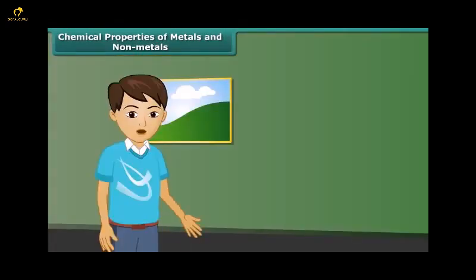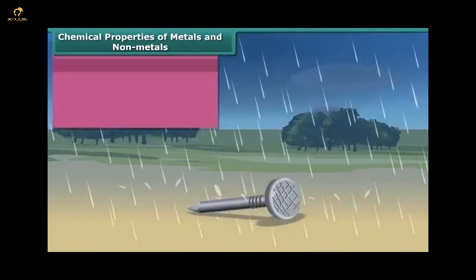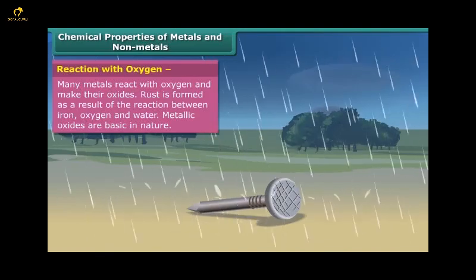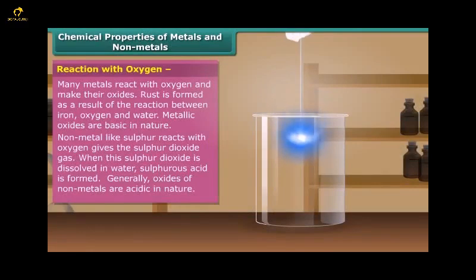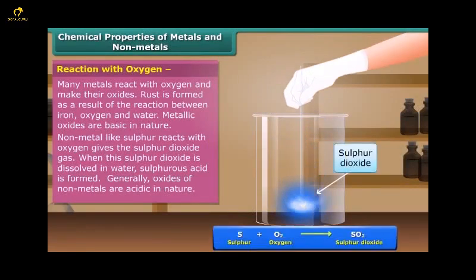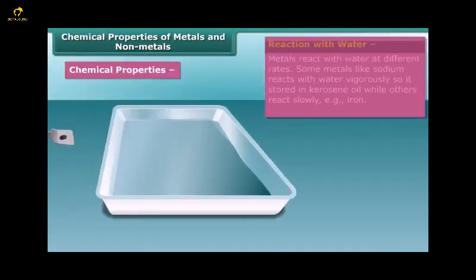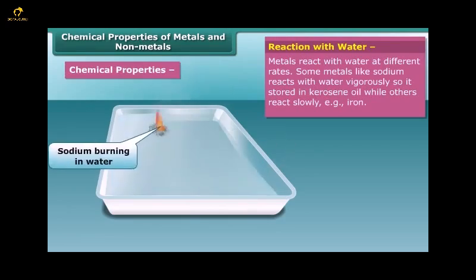After discussing physical properties, let's know about chemical properties. Metals like iron, copper, and magnesium react with oxygen and form their oxides, which are basic in nature. Non-metals also react with oxygen — for example, sulfur reacts with oxygen producing sulfur dioxide gas. Oxides of non-metals are acidic in nature.